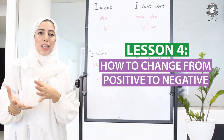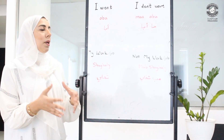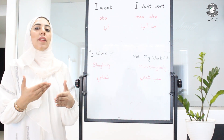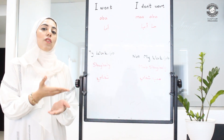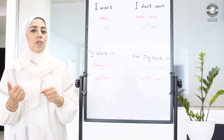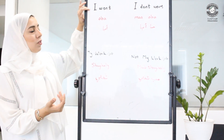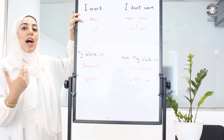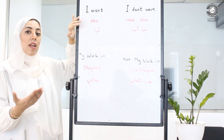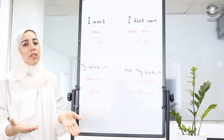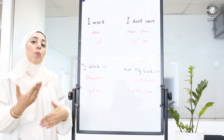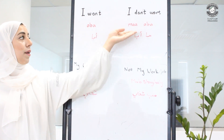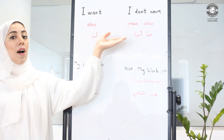For any verb, if you want to change it to negative, you just have to add the sound of 'ma' in front of the verb. For example, the verb 'I want' in Emirati is 'Abba'. So if you want to say 'I don't want', you're gonna say 'ma ba' or 'ma Abba'.